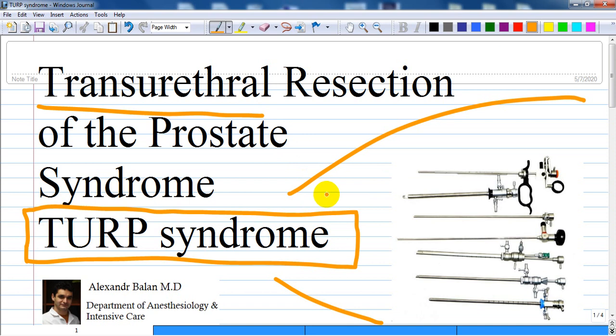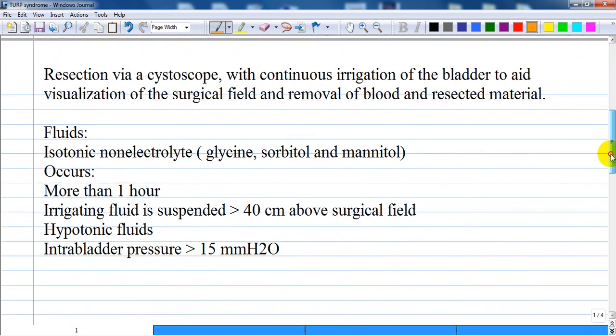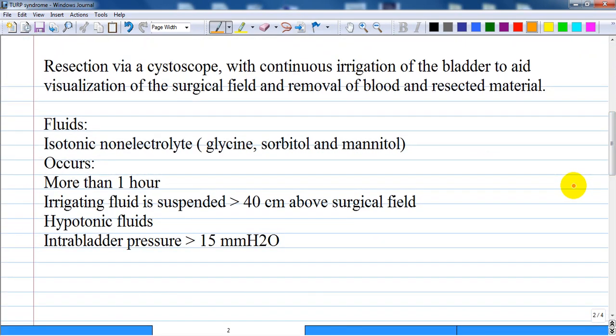TURP syndrome is used in benign prostatic hyperplasia, which is often treated surgically by transurethral resection of the prostate. This procedure involves resection via a cystoscope with continuous irrigation of the bladder to aid visualization of the surgical field and removal of blood or resected material.